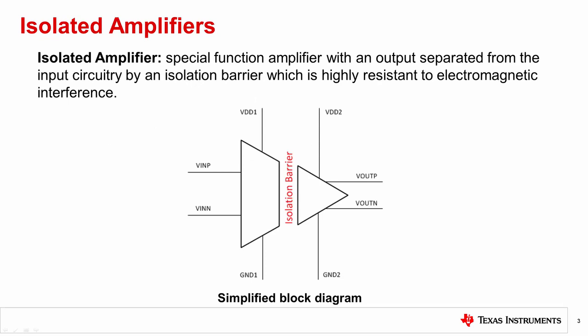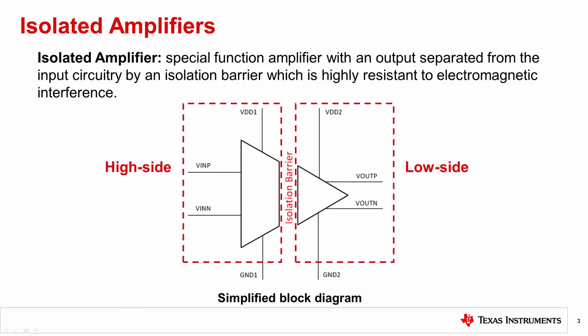Let's start by defining what an isolated amplifier is. An isolated amplifier is a special function amplifier with an output separated from the input circuitry by an isolation barrier which is highly resistant to electromagnetic interference. This interference, also known as EMI, is caused by external sources and when ignored can degrade the performance of the signal chain or cause errors in the data. While there are several different methods for achieving isolation, Texas Instruments employs a capacitive isolation barrier. The purpose of the isolated amplifier is to provide protection against electrical shock hazards in high-voltage applications, or to isolate parts of circuits from each other by breaking the ground loops.